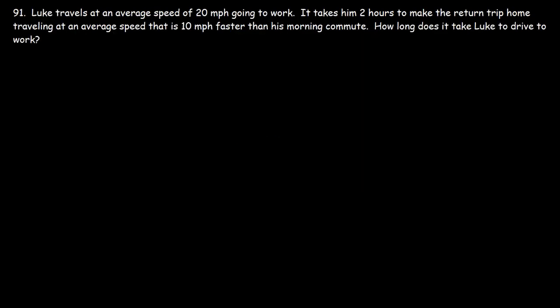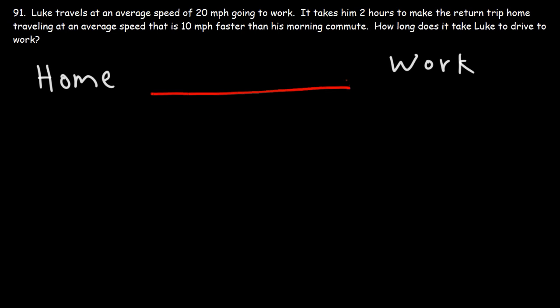Number 91. Luke travels at an average speed of 20 miles per hour going to work. It takes him two hours to make the return trip home, traveling at an average speed that is 10 miles per hour faster than his morning commute. How long does it take Luke to drive to work? Let's represent the situation: this is his home and here is where he needs to go to get to work. During his morning commute, he's traveling at 20 miles per hour. Our goal is to calculate the time it takes to go from home to work.